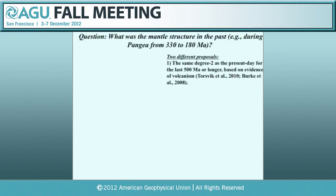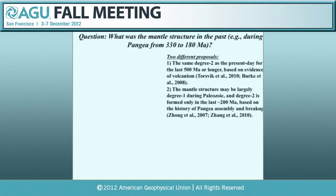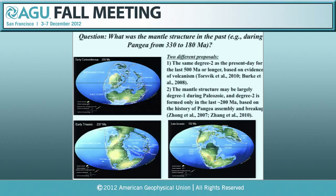For the last few years there have been two different proposals. One view is that the same degree-2 structure as present day has existed for the last 500 million years or longer, based on evidence from volcanism. Another view is that the mantle structure was largely degree-1 during the Paleozoic, with degree-2 being a relatively new feature that has probably only existed for the last 200 million years — based mostly on the history of Pangea assembly and breakup. Pangea assembled about 330 million years ago from the collision between Laurasia and Gondwana, and that plate motion history would have influenced the mantle structure.